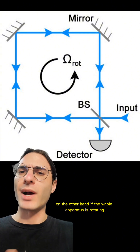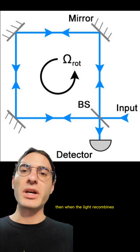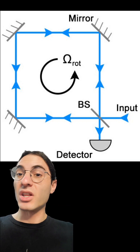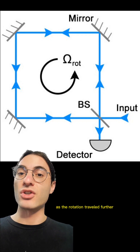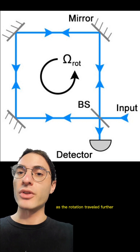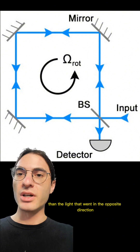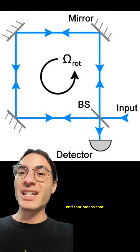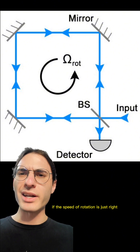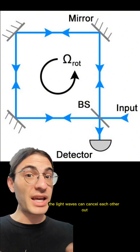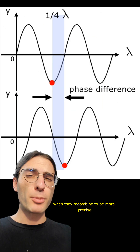On the other hand, if the whole apparatus is rotating, then when the light recombines, the light that went in the same direction as the rotation traveled further than the light that went in the opposite direction. And that means that if the speed of rotation is just right, the light waves can cancel each other out when they recombine.